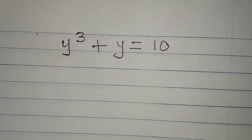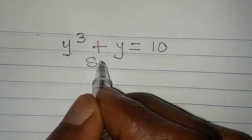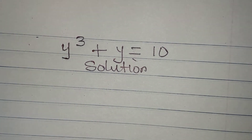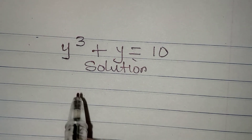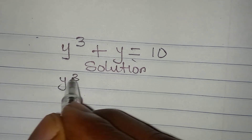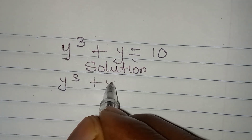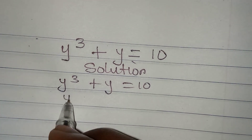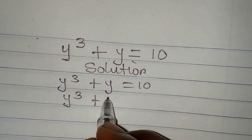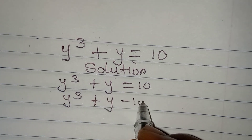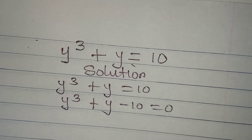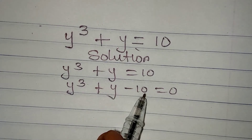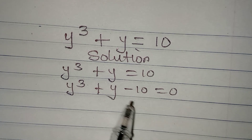Let's deal with this very quickly. We have to find the values of y from y to the power 3 plus y equals 10. This means that y cubed plus y minus 10 is equal to 0 — I have brought the 10 to the left-hand side.